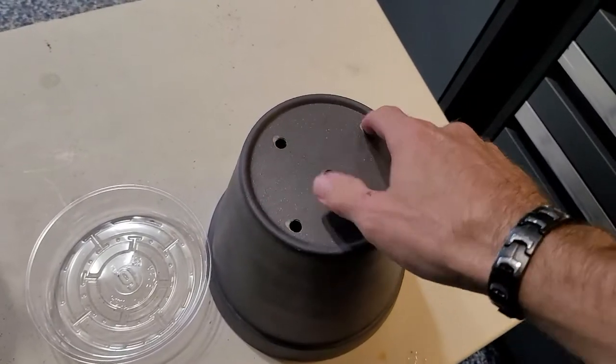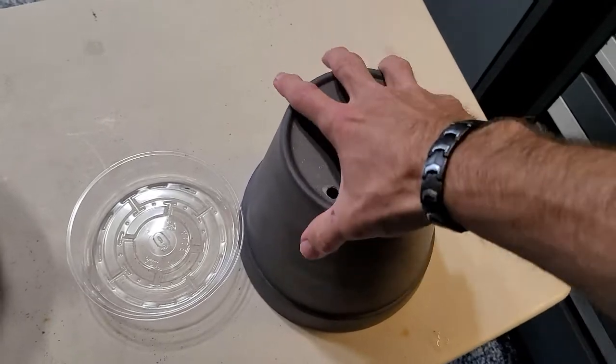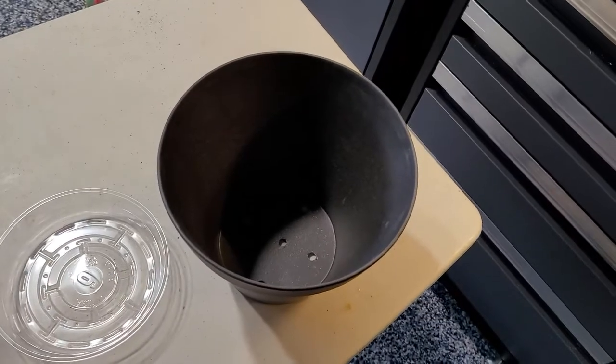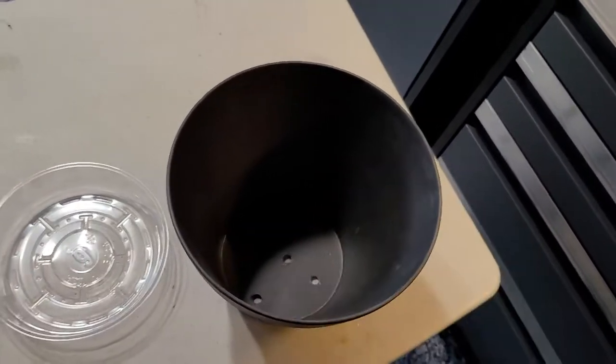These holes are to help water the plant. A lot of people sometimes water their plant from the top, and that's usually not a very good practice. I highly recommend that you water from the bottom—bottom watering.